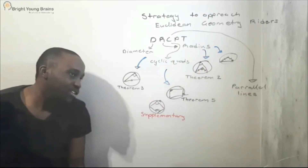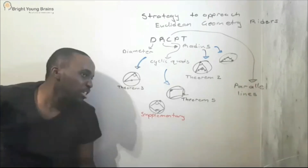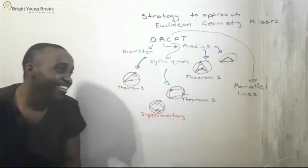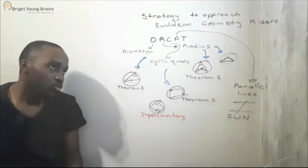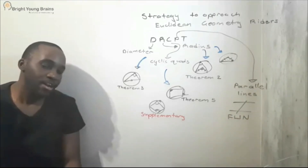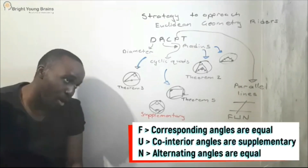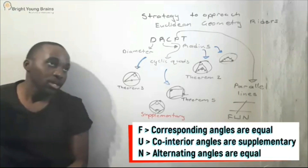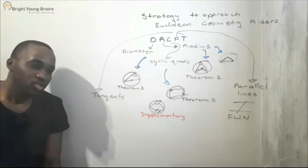P refers to parallel lines. Whenever we think of parallel lines, we need to remember: F for corresponding angles, U for co-interior angles, and N for alternating angles — that's the FUN rule. So P helps you remember to look out for parallel lines and apply those angle relationships.